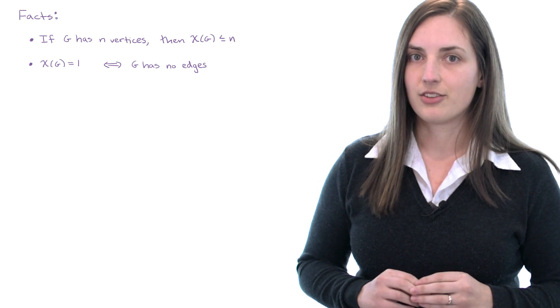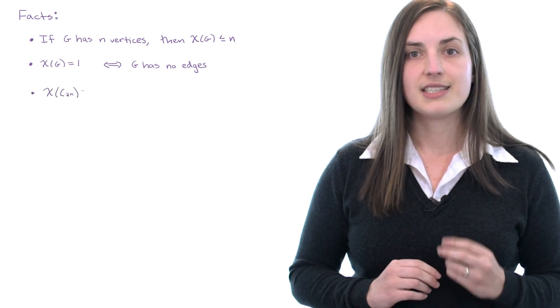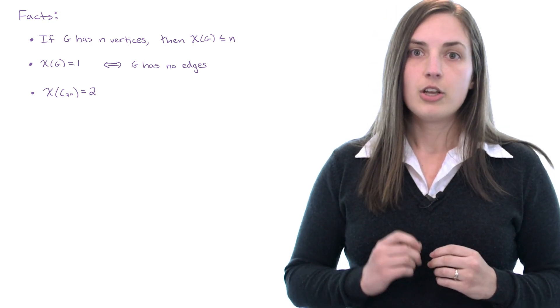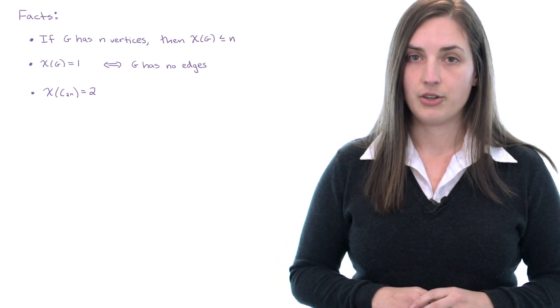Next let's think about cycles. The chromatic number of a cycle of even order is equal to two. You can think about this by doing exactly what we did on the four cycle, just go around alternating colors one two one two all the way around until you get back to the beginning.